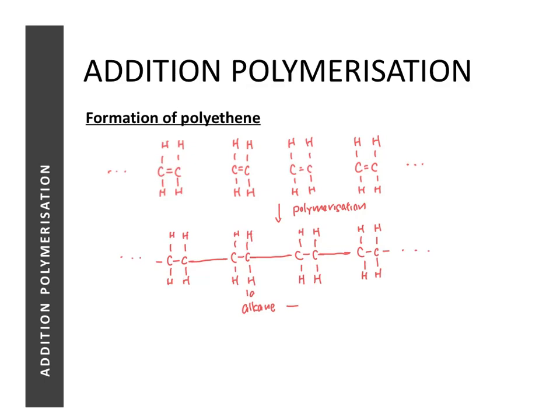Naming a polymer is straightforward: the name is simply 'poly' followed by the name of the monomer in brackets. So if the monomer is ethene, the polymer is called poly(ethene). If the monomer is butene, the polymer formed is called poly(butene). Whatever the name of the monomer, the polymer is just 'poly' plus the monomer name in brackets.